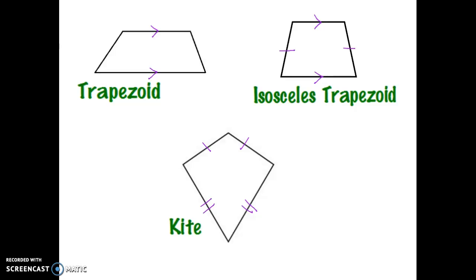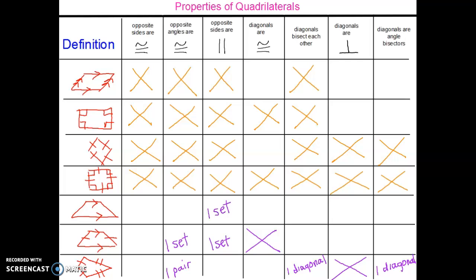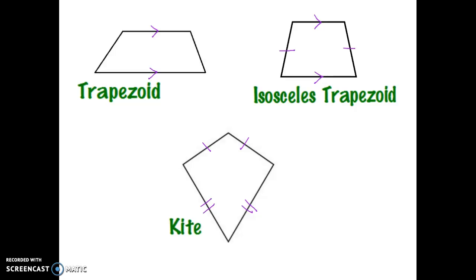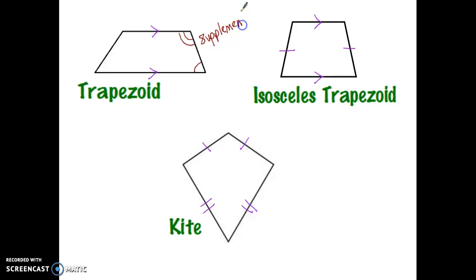Starting with the trapezoid — based on its definition, there's one set of parallel sides. If I look back at the properties, nothing else exists. I don't have any other angles I can assume to be congruent, and I don't have sides that are congruent. The only thing that is true for the trapezoid, because I have parallel lines, is that two consecutive angles would be supplementary. That goes back to consecutive interior angles between parallel lines. It doesn't matter which set — it could be these two angles on the far left, but consecutive interior angles are supplementary.